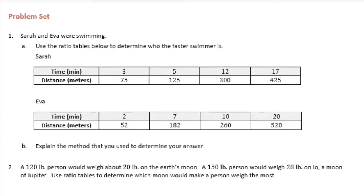6th grade module 1 lesson 11 problem set number 1: Sarah and Eva were swimming. Use the ratio tables to determine who the faster swimmer is. So Sarah, in 3 minutes she can travel 75 meters, in 5 minutes she swims 125 meters, and so on. Let's try and find the value of this.